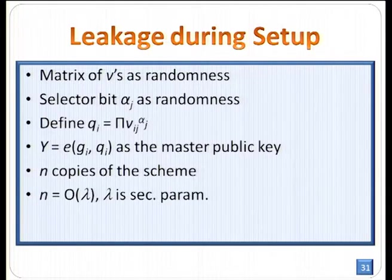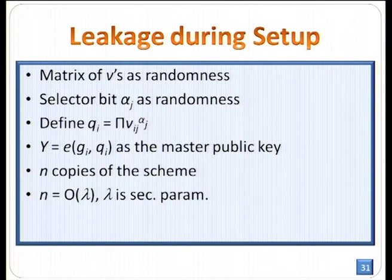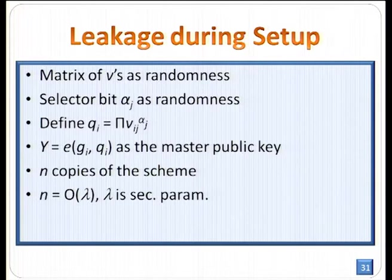We give an extension to support leakage during the setup phase. In this setup, we have a matrix V used as randomness and scalar bits α_j also as randomness. We define Q as a product of those matrices to the power of the α's. The master secret key is a pairing of these numbers, and we have n copies of them in the scheme. By this matrix-type construction, we need to use the lattice-based assumption, and as a result the public parameters will be of size O(λ) where λ is the security parameter.